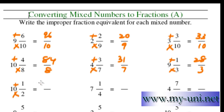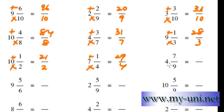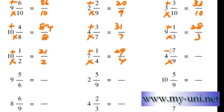10 times 2 is 20. 20 plus 1 is 21 over 2. 4 times 7 is 28. 28 plus 1 is 29 over 4. 4 times 9 is 36. 36 plus 7 is 43 over 9.